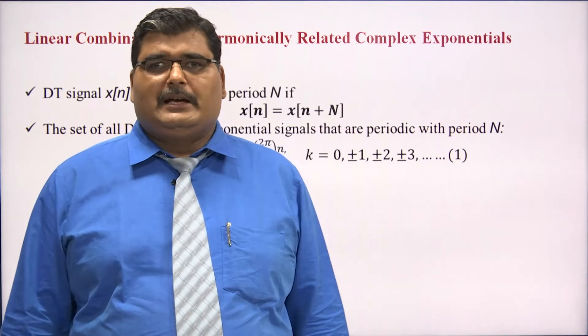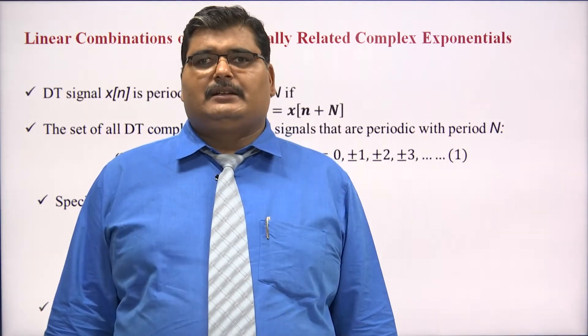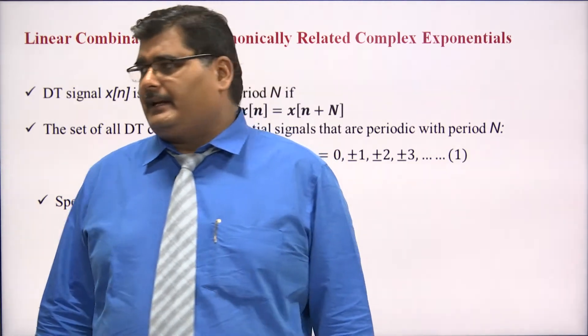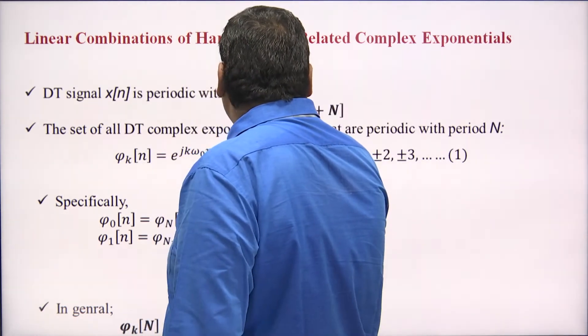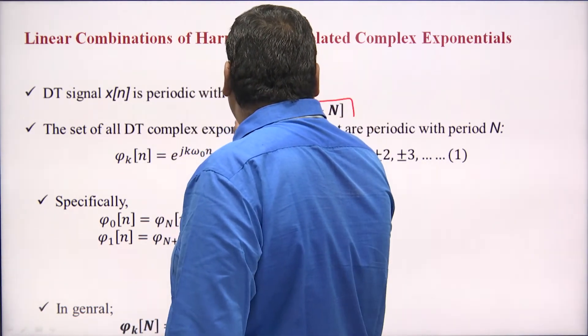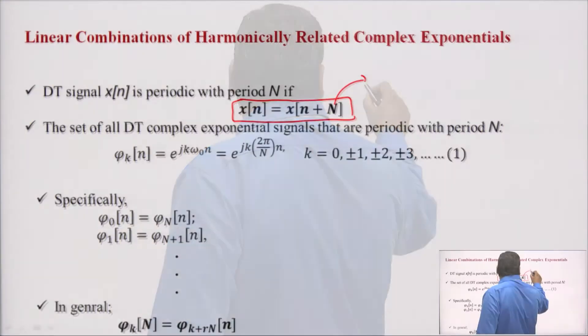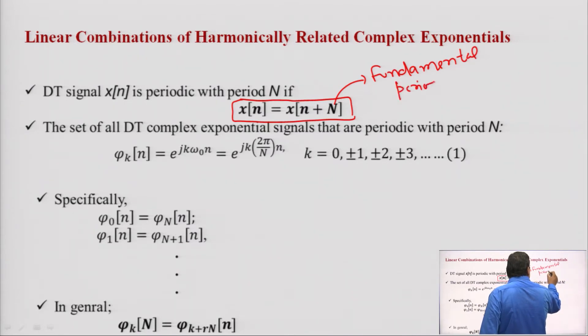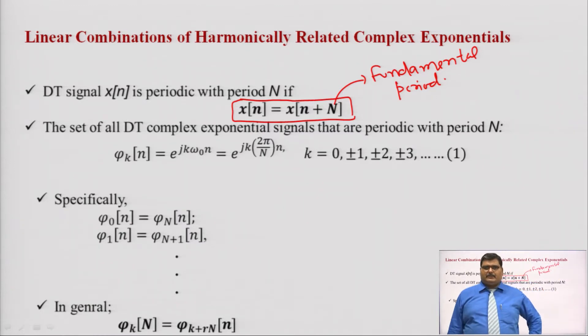Today we will discuss about the Fourier series for discrete time periodic signals. Suppose we have a discrete time signal x[n]; this signal is periodic when x[n] equals x[n + N], where capital N is known as the fundamental period or periodicity of the signal.